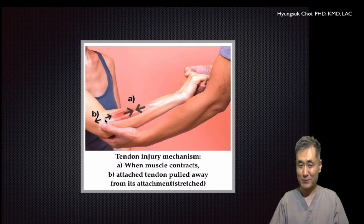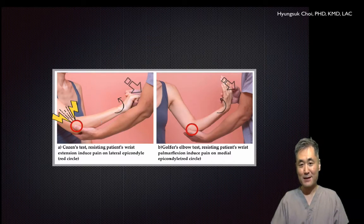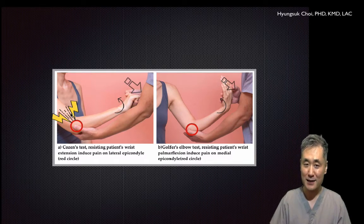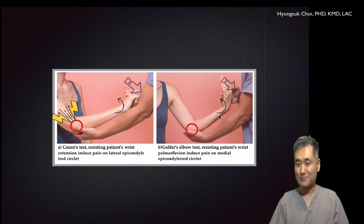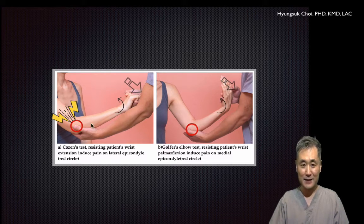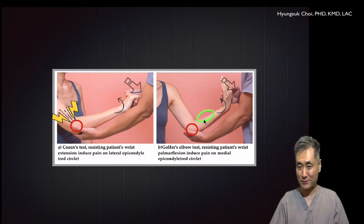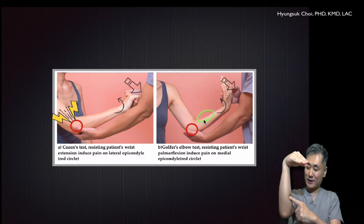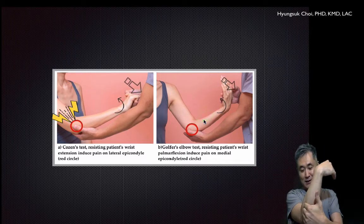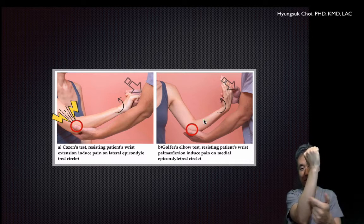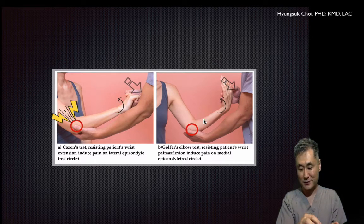The muscle is contracting without movement and the tendon is stressed. This is a golfer's elbow test and this is a tennis elbow test — the mechanism is identical. This is the resisted contraction of extensor muscles for tennis elbow, and wrist resisted contraction with the flexor muscles for golfer's elbow. Golfer's elbow involves the flexors, tennis elbow involves the extensors — the only difference is the muscles; the mechanism is the same.